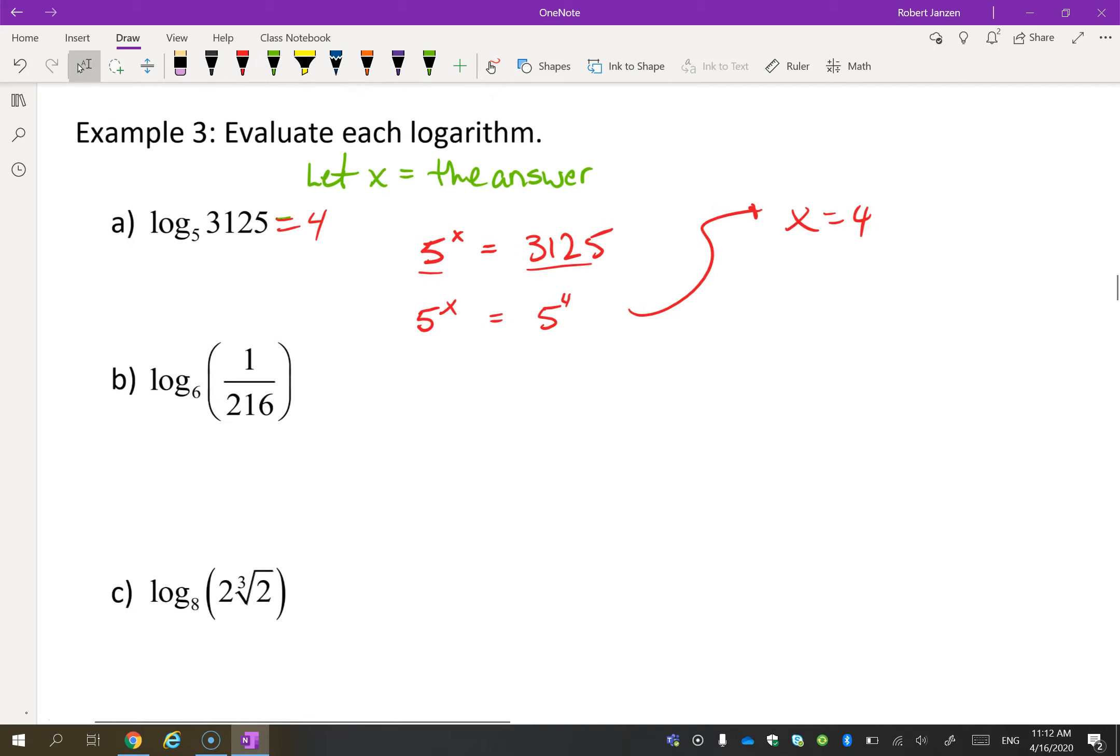Let's try this one. Again, I'm going to say let x be the answer. So I'm going to have 6 to the power of x is 1 over 216. So can I write 216 as the power of 6? Yes, it is to the power of 3. But since it's in the denominator, it's 6 to the negative 3. And so x is negative 3.